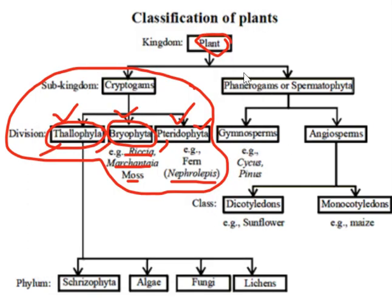Next we talk about Phanerogames, that is Phanerogames or Spermatophyta, which is divided into two main divisions: one is Gymnosperm and another is Angiosperm. For Gymnosperm, for example, Cycas and Pinus. Plants belonging to this group bear naked seeds — that means the seeds are not enclosed in fruits. Gymnosperms bear seeds in structures called cones, and they bear both male and female cones containing pollen and ovules respectively. There are two main types in Gymnosperm: Cycadales and Conifers.